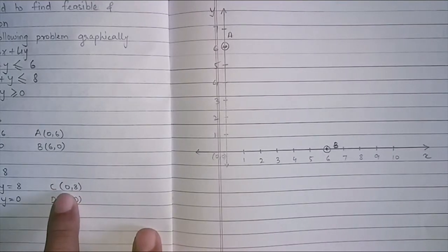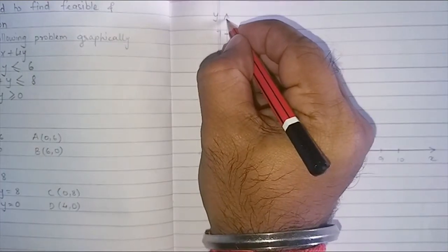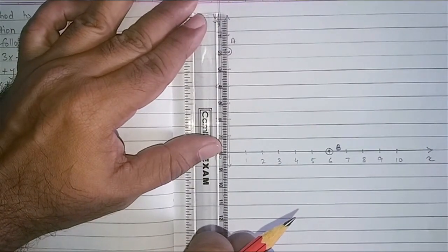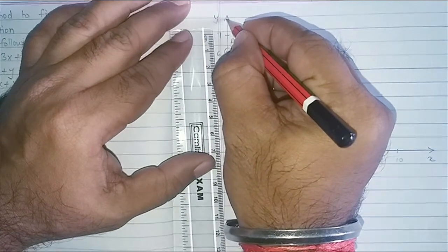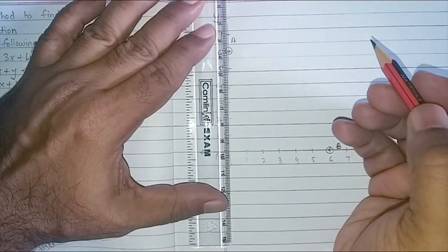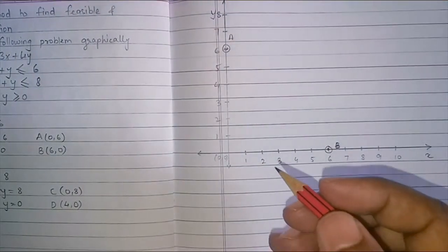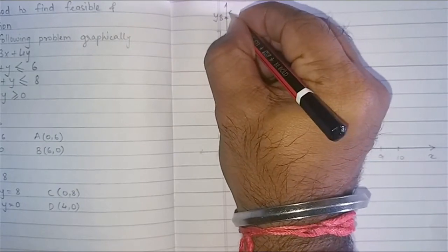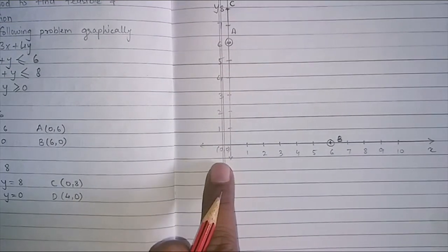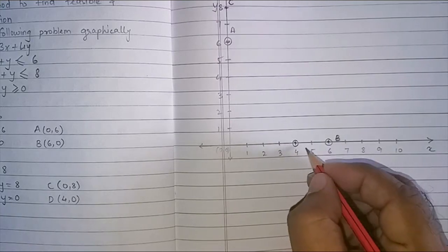Next one is point C. We have x as 0 and y as 8. So, y is 8. So, I will just extend this here. Now, let us measure it and get 0, 8. So, I will extend this line further. This is 8. So, my next point is coming here, C. And point D is 4 comma 0. So, on the x axis, I have 4 and y is 0. So, it is lying on my x axis. The point is here and it is D.